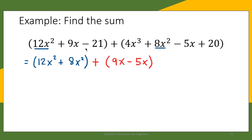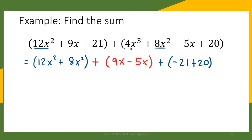The third term of the first polynomial is negative 21, a constant term. We combine it with the constant term of the second polynomial, positive 20, so we add negative 21 and positive 20. As you may notice, there is a term in the second polynomial with no like term — that is 4x cubed, which has variable x and exponent 3. Since there is nothing matching in the first polynomial, we just copy the term.